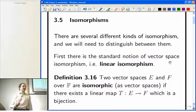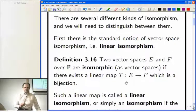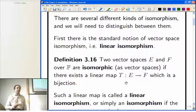We've got, first of all, vector spaces, and then there's a notion of linear isomorphisms. So, a linear isomorphism is a linear map, which is a bijection.